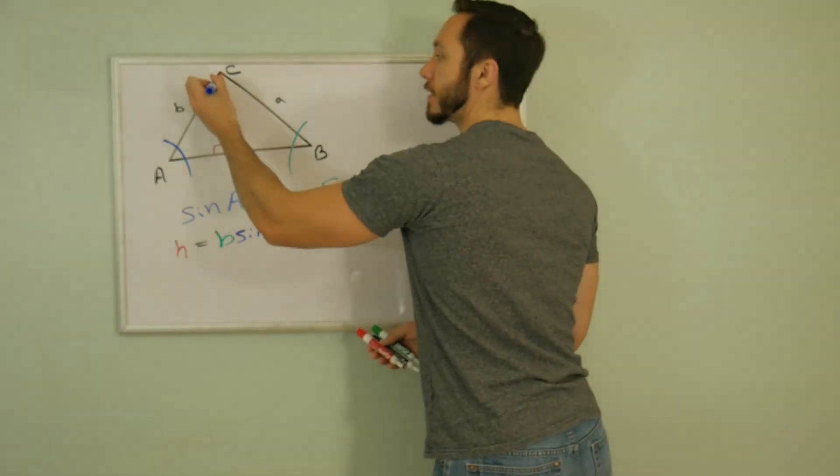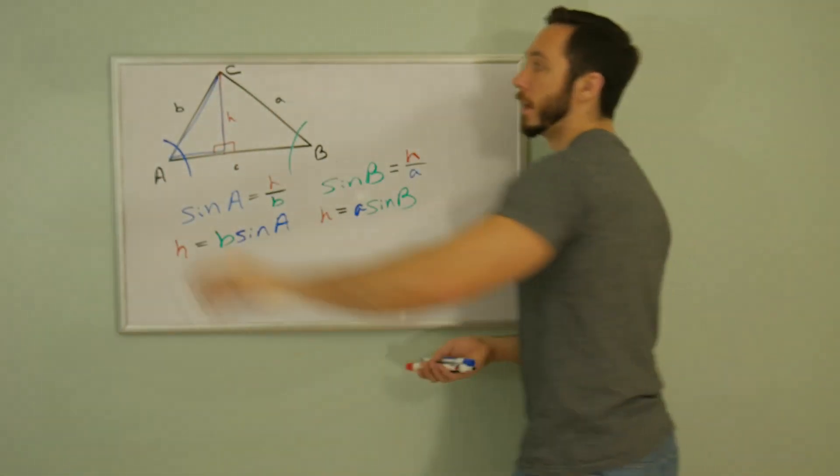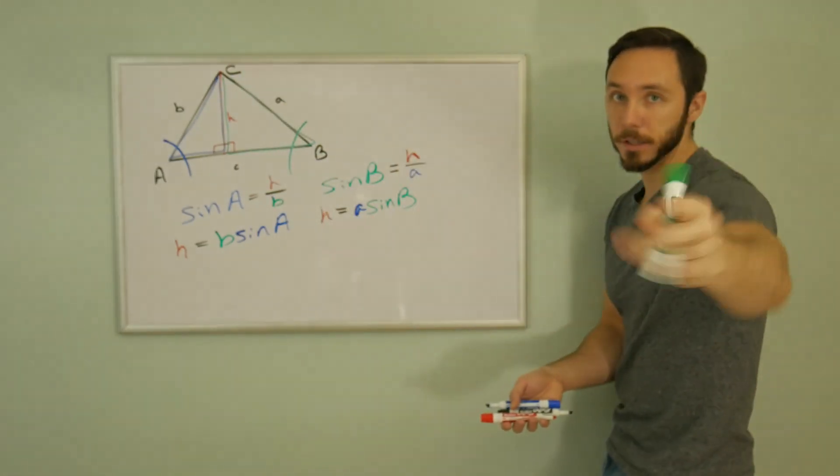And just a heads up, if you didn't see the two triangles I was referring to, it's this blue one and this green one. Those are the two right triangles I just played around with.